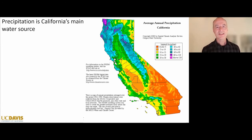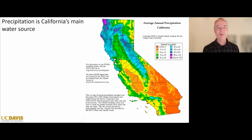Precipitation in this state is very unevenly distributed. We have most precipitation on the coast in the northwestern corner of the state, and also a lot in the mountains — the Sierra Nevada, the Cascade Range, and the coastal range along the coast of California.